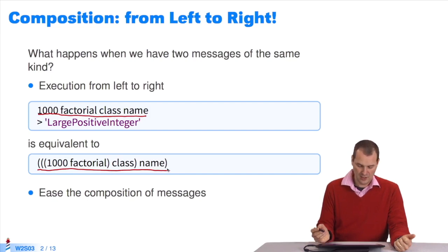You execute it as if I had written all these parentheses. You can see they're annoying. When you have messages at the same level, unary, binary, or keywords, it works with all three. It evaluates them from left to right.